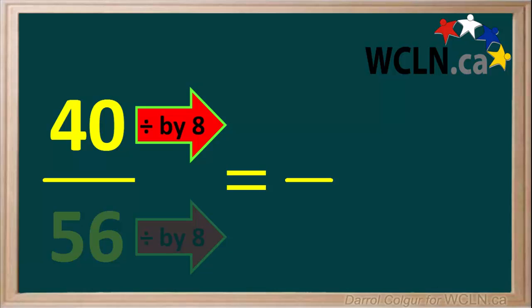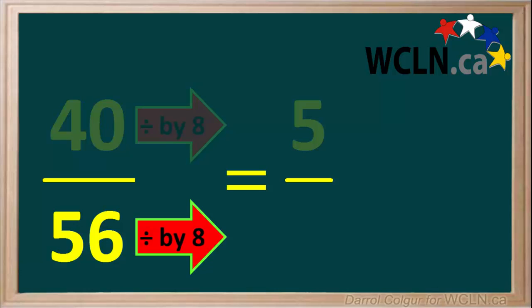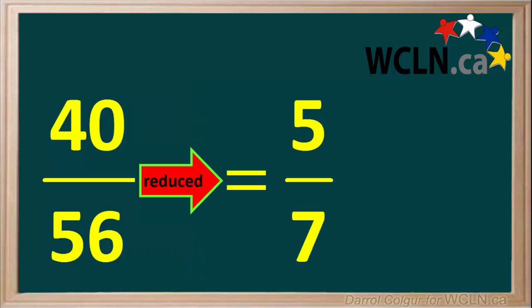40 divided by 8 is equal to 5. 56 divided by 8 is equal to 7. So the original fraction 40 over 56 can be reduced to 5 7ths.